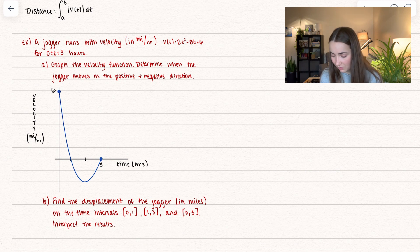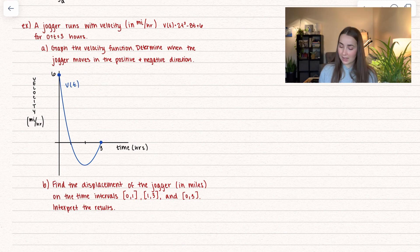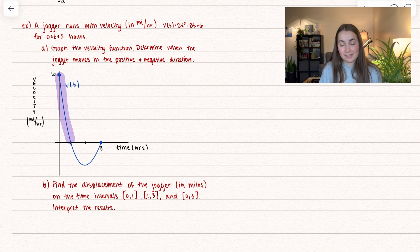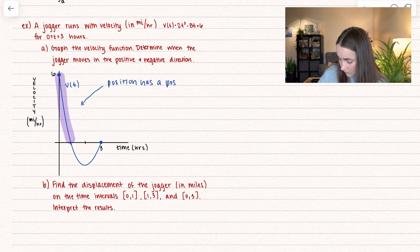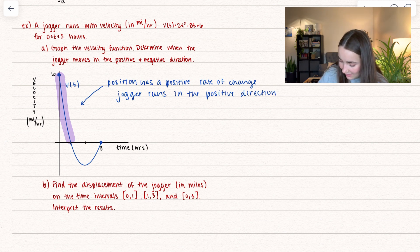Let's talk about an example. We have a jogger running with velocity in miles per hour given by that function, between 0 and 3 hours. For part A, we want to graph the velocity function and determine when the jogger moves in the positive and negative direction. Here I've already graphed it. The velocity is positive between t = 0 and t = 1 hours, which means the position has a positive rate of change, so the jogger is running in the positive direction during that interval.